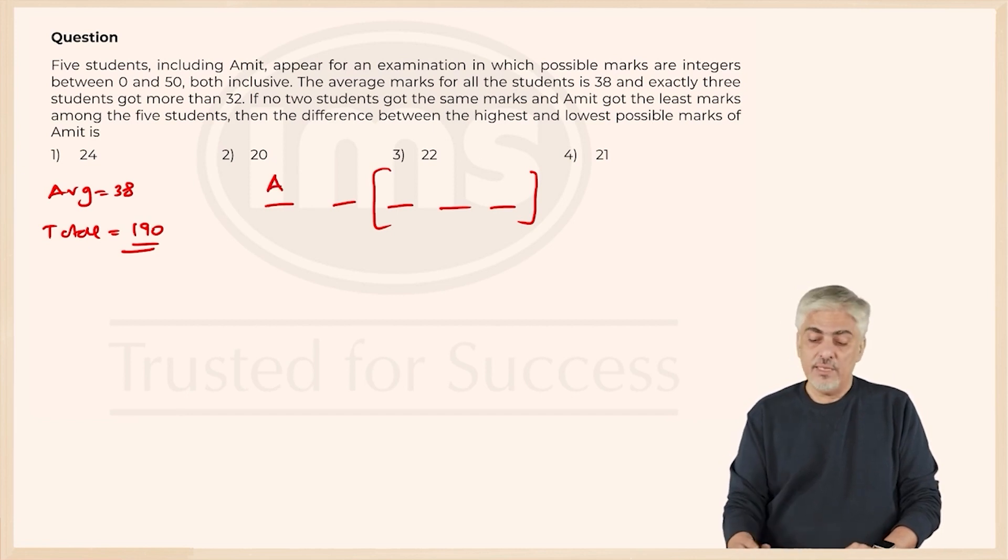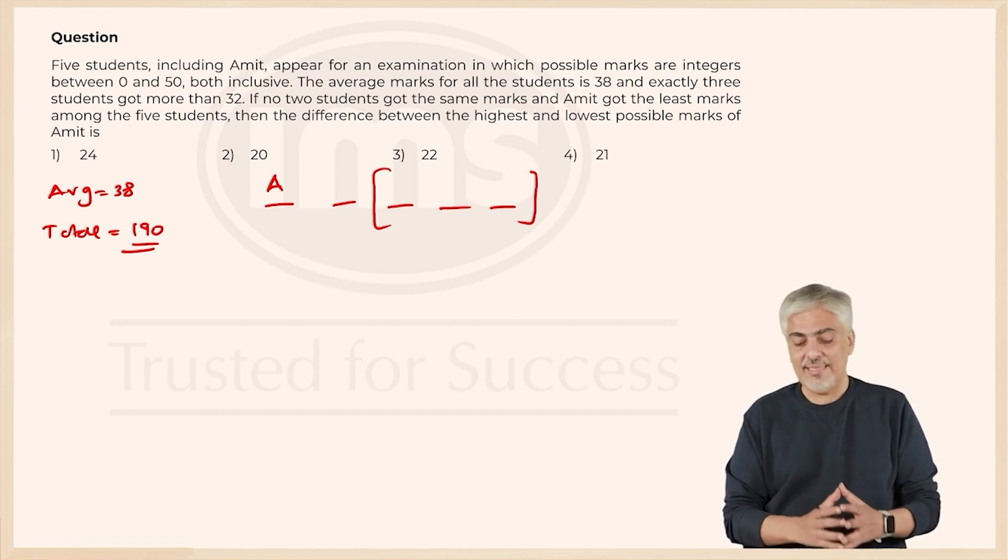So this is definitely Amit among the 5 students, and the difference between the highest and the lowest possible marks for Amit is how much. So what is the highest Amit can get and what is the lowest Amit can get, and we need to find the difference between that. So I cannot use options.